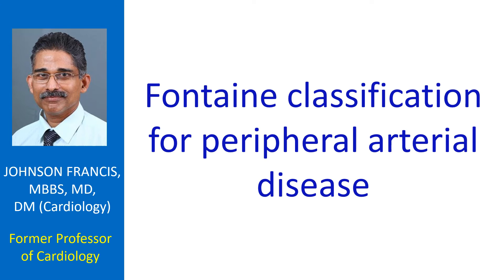Rutherford Classification classifies Peripheral Arterial Disease into Acute and Chronic Limb Ischemia. Each is further subdivided into grades and categories based on symptoms, clinical findings, Doppler, Ankle Brachial Index, and Pulse Volume Recordings.